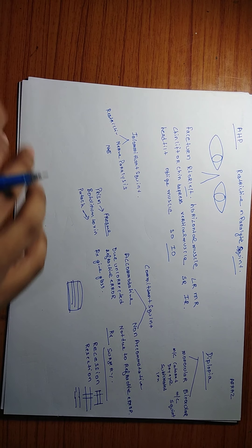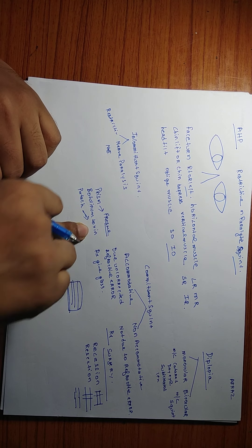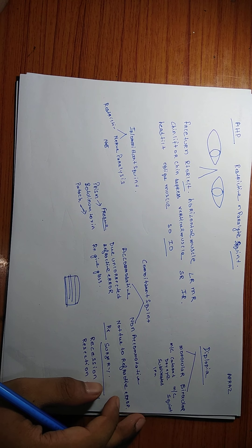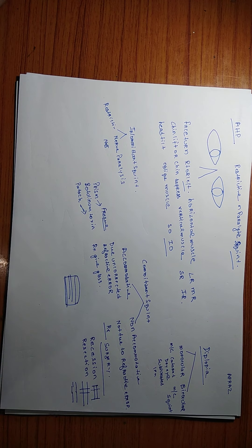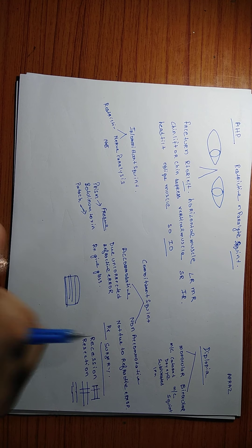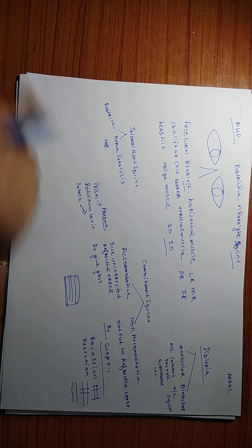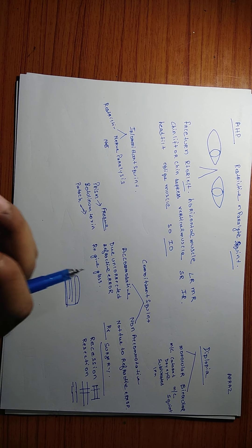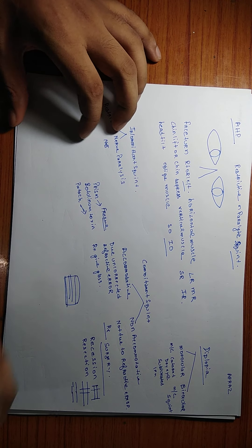Botulinum toxin is also used in cosmetics — for wrinkles, injecting the toxin paralyzes the muscle and releases wrinkles. In squint, if we inject botulinum toxin into the strong muscle, it becomes weak. Make sure you do not inject on the weaker muscle as that will worsen the condition. For example, if the lateral rectus is paralyzed and weak, we give the injection on the medial rectus — the stronger opposing muscle.